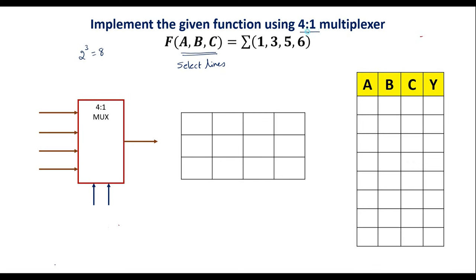But here we are required to use a 4-to-1 mux. In that case, among the 3 variables, we have to consider 2 variables as select lines and 1 variable as a data line. So I will assume b and c as select lines and use a as the data input, because a 4-to-1 mux has only 2 select lines.